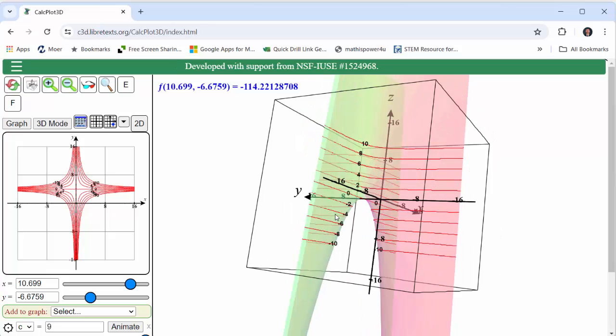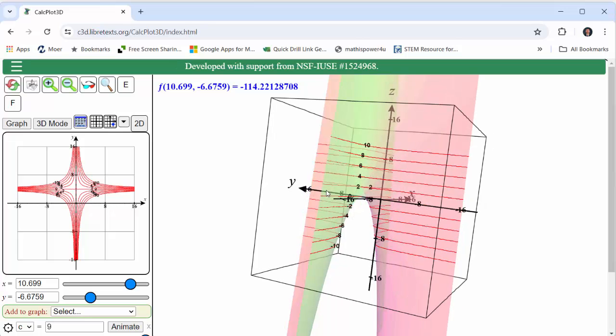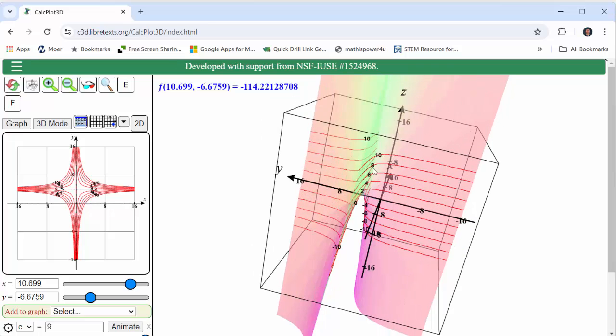We're looking for the equation of the level curve for c = 8, which is the curve created when the plane z = 8 intersects the given surface, which we can see here up at the top.